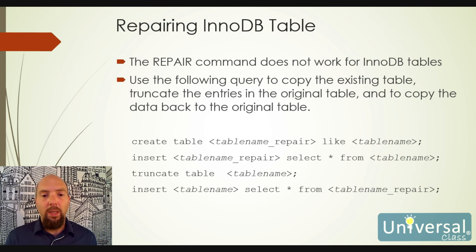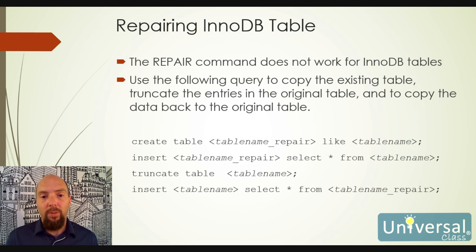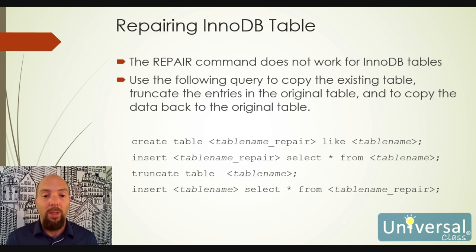The REPAIR command only works for MyISAM tables, not InnoDB. To repair an InnoDB table, you must: create an exact copy of the table structure, copy all data from the corrupted table into the new one, delete the contents of the original table, then insert the data back from the repair table. If errors occur during copying, you may need to copy records in batches of 100, 10, or 5 at a time to isolate the corrupted record.